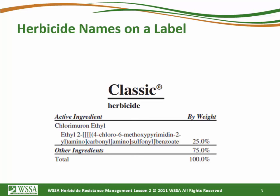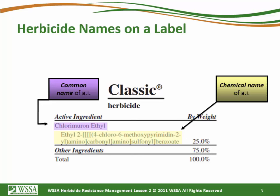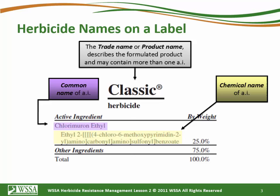On pesticide labels, the chemical name — that long name none of us can pronounce — and the common name are listed. These stay consistent regardless of what the trade names might be. As many products are coming off patent and we have a lot of generics out there, trade names change from company to company, but the common name and the chemical name remain consistent across products.